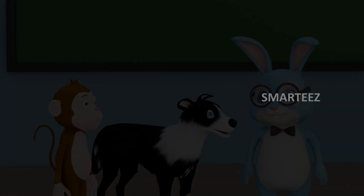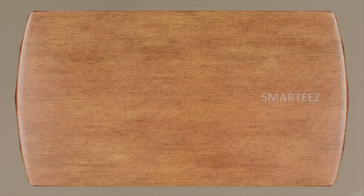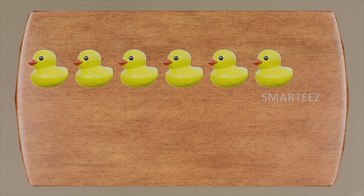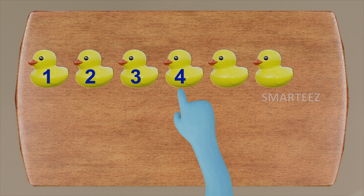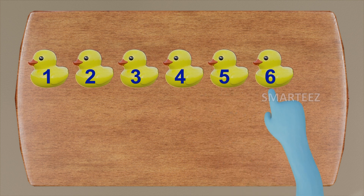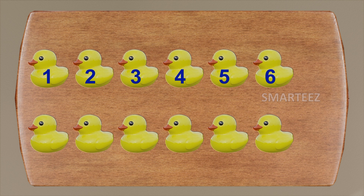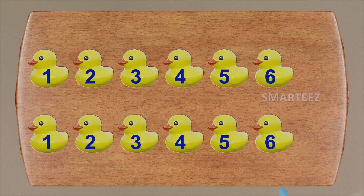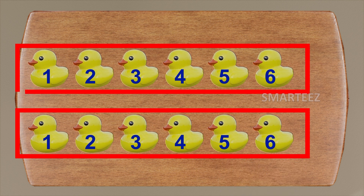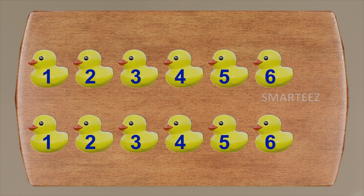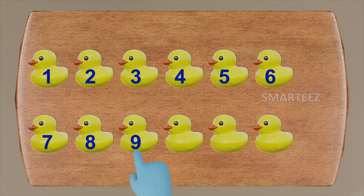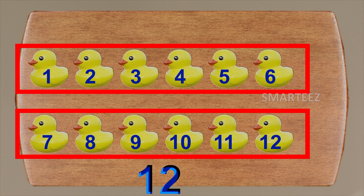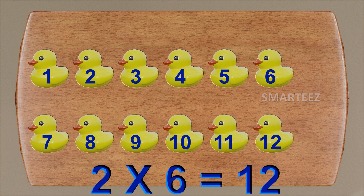I want you to watch closely at the table. I have six rubber ducks here — that's one, two, three, four, five and six. I'm now gonna put another set of six more rubber ducks: one, two, three, four, five and six. What if we add these two sets of six rubber ducks? Then we have to count the second set starting from seven: seven, eight, nine, ten, eleven and twelve. We can say two sets of six rubber ducks is twelve, or two times six rubber ducks is twelve.